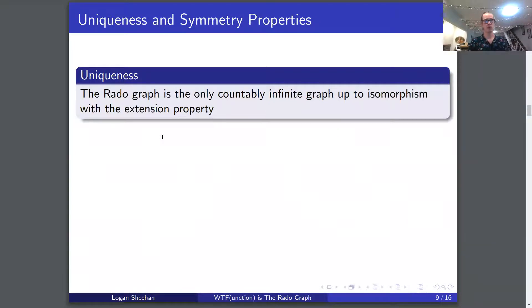Now onto the uniqueness property. The Rado graph is the only countably infinite graph up to isomorphism with the extension property, and we get that from lemma two in the extension property. Any two graphs that have the extension property are isomorphic to one another. That means all infinite graphs that have the extension property are isomorphic to R.